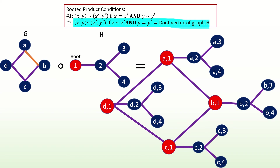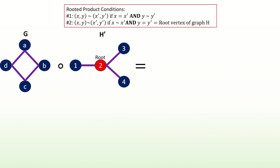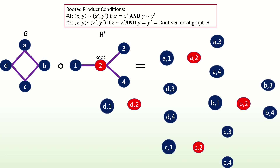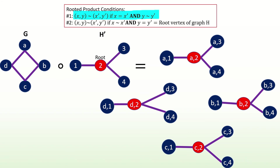Moving on to our next example, let's find the rooted product of g with h prime, where h prime is the same as h from our previous example, except that the root of h prime is vertex 2. Again, find the vertex set. Then find all the adjacencies that derive from our first condition. Feel free to pause the video and find these yourself. Here they are. Notice how they're the same edges that we found from the first adjacency condition in the previous example. Changing the root vertex of the second input graph did not change which edges came from the first adjacency condition.